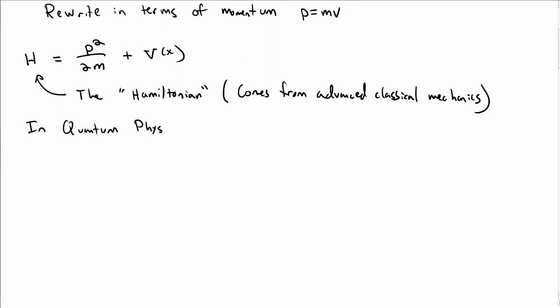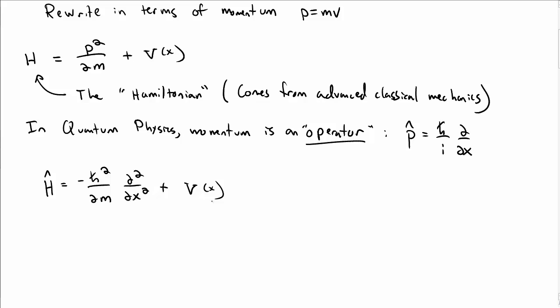So recall in quantum mechanics, we said that momentum is represented by an operator, and that operator is p-hat, h-bar over i partial partial x, so that the Hamiltonian becomes minus h-bar squared over 2m, the second derivative with respect to x, plus v of x, where you just put p-hat in for p above.